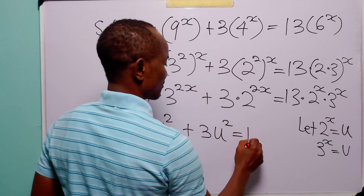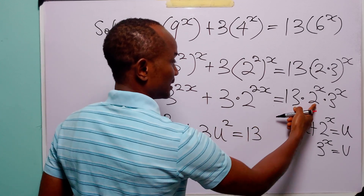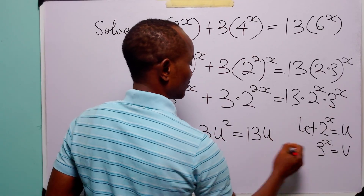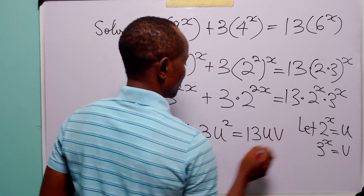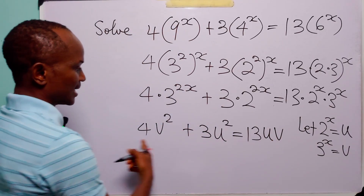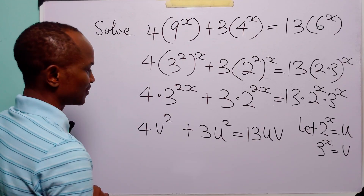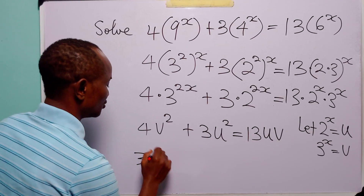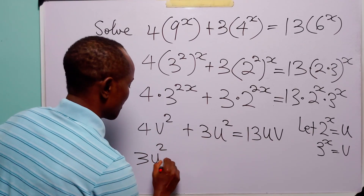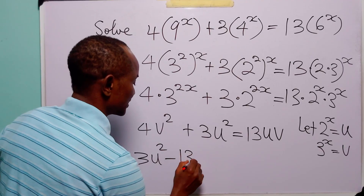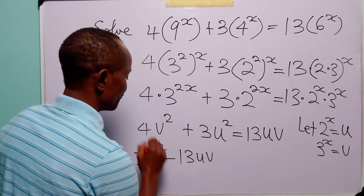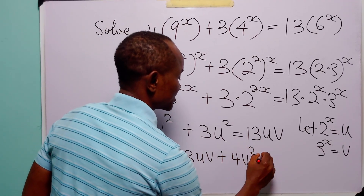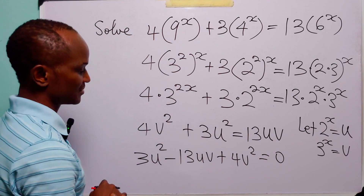And this is equal to 13 times uv. Now let us rearrange this quadratic equation. We have 3u squared minus 13uv plus 4v squared is equal to 0.